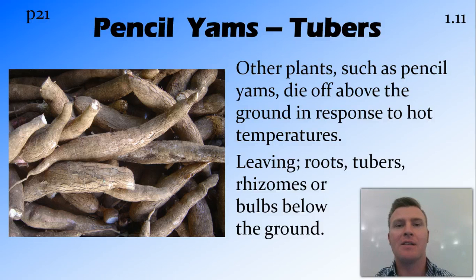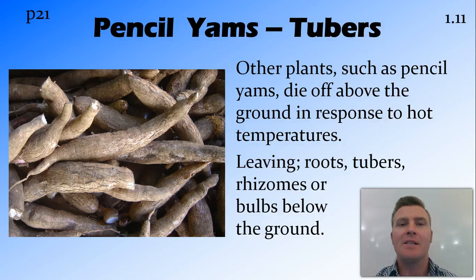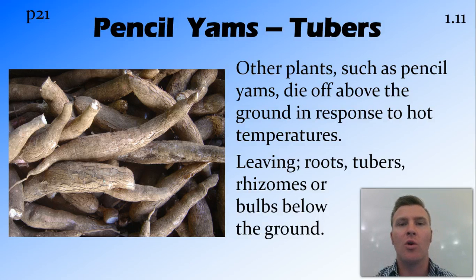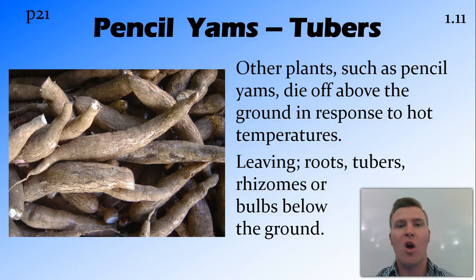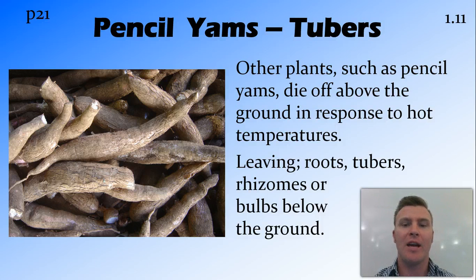Another thing that plants can do is allow all the leaves and shoot system above the surface to die while leaving below-ground structures such as roots, tubers, rhizomes, or bulbs. These structures have enough energy stored within them so that when conditions become right for the plant again, it can re-sprout and start growing. An example of this are pencil yams.